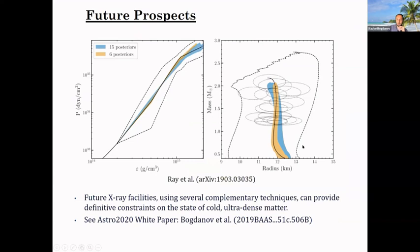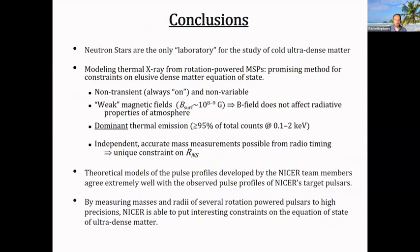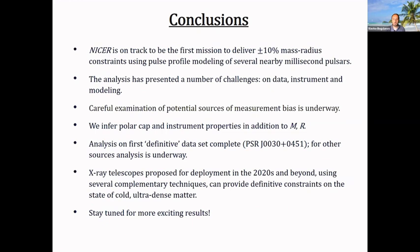In conclusion, we use millisecond pulsars as they seem best suited for this purpose. We've developed machinery to analyze this data, and it's a very challenging type of analysis, but we've made a lot of progress. We're on track to delivering multiple plus-or-minus 10% mass-radius constraints. Along the way, we're still examining potential sources of systematic error that we're trying to get a handle on. The next two talks will take it from here. Thank you for your time.